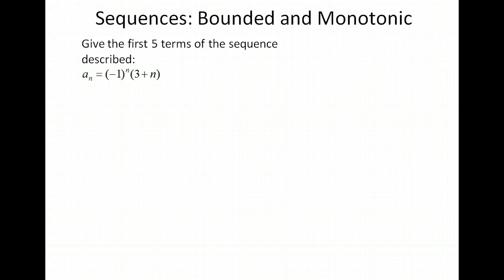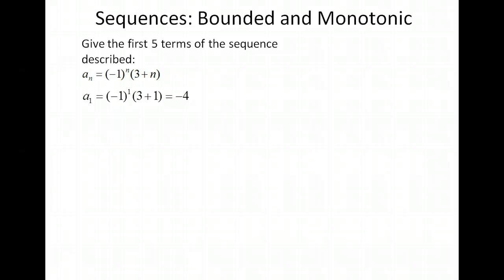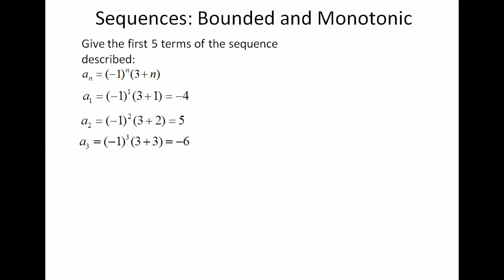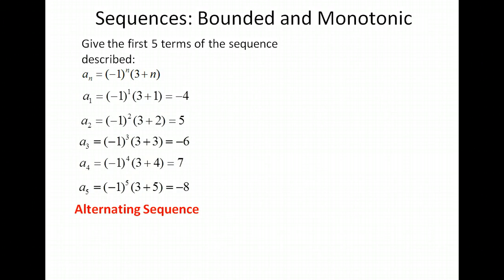Let's look at our next example. We want to find the first five terms of the sequence. Starting with n equals 1, we have negative 1 to the first power times (3 plus 1), which gives us negative 4. For the second term, plugging in 2, we get 5. Plugging in 3 gives negative 6, and plugging in 4 gives 7. What you notice is that the output values are integers increasing — 4, 5, 6, 7 — but with alternating signs: negative, positive, negative, positive. This is what we call an alternating sequence.